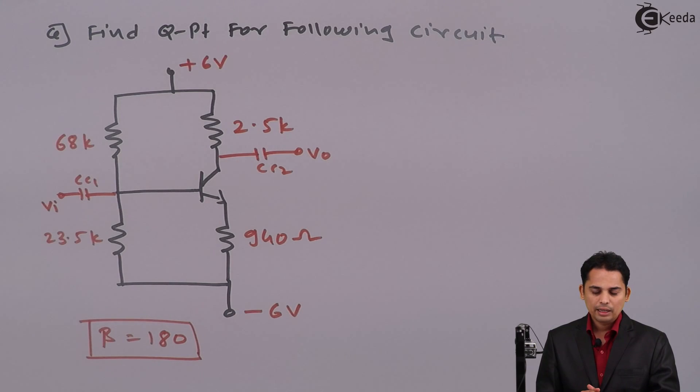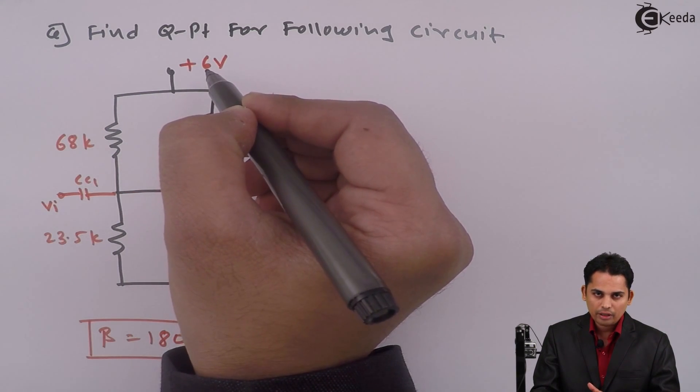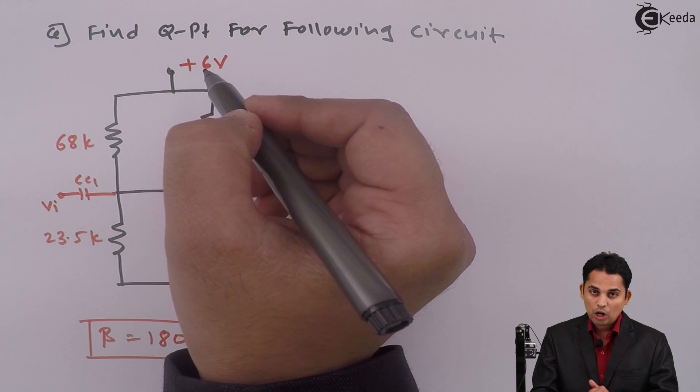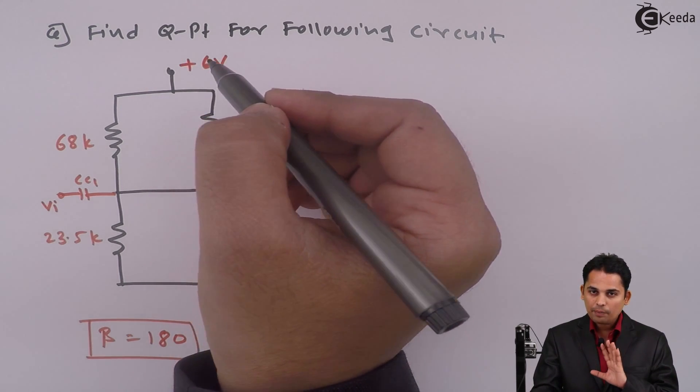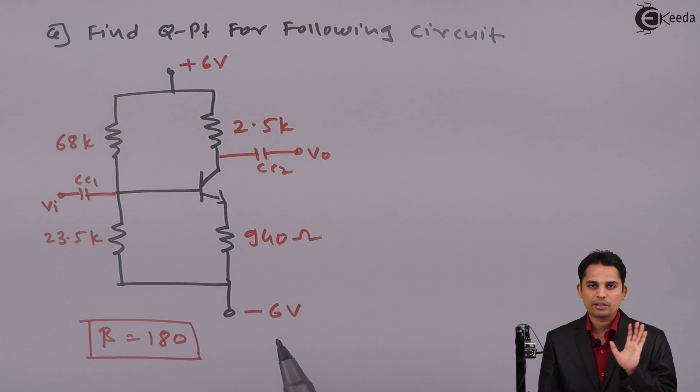You can see that now there is a DC battery at the collector called as VCC is present. But along with that another battery is present at the ground of minus 6 volt. So this is a new variation in the voltage divider bias circuit.